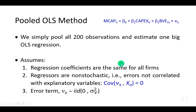Secondly, we assume that the errors are not correlated with any of the explanatory variables, so that their covariance is zero. This assumption is necessary for us to be sure that our parameter estimates are unbiased and consistent.